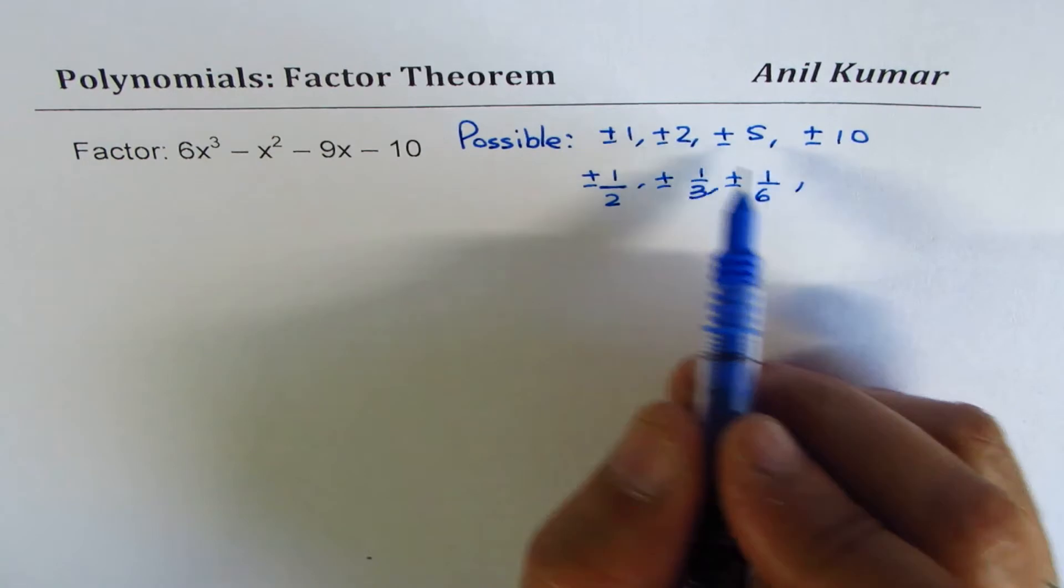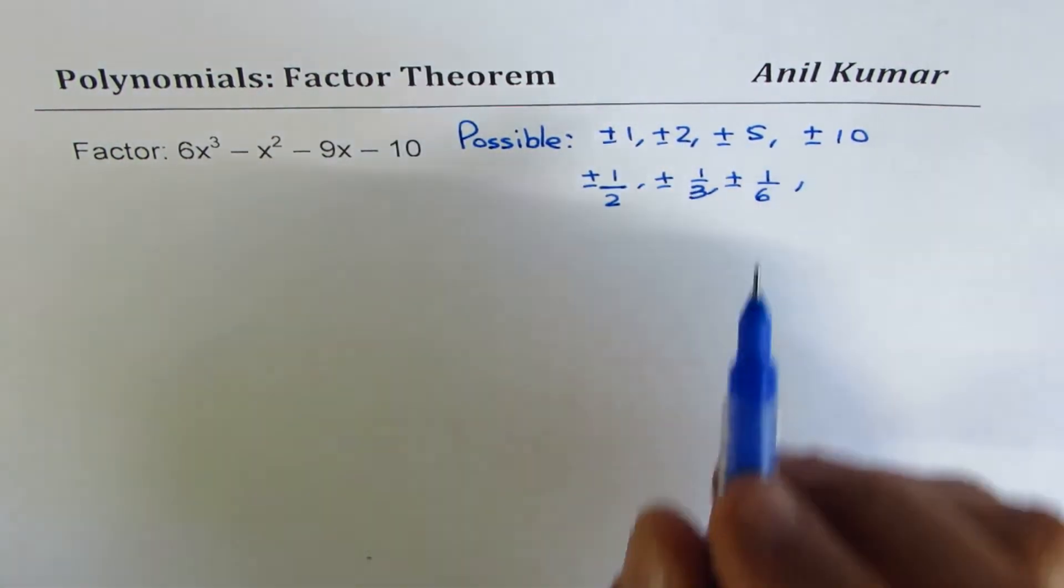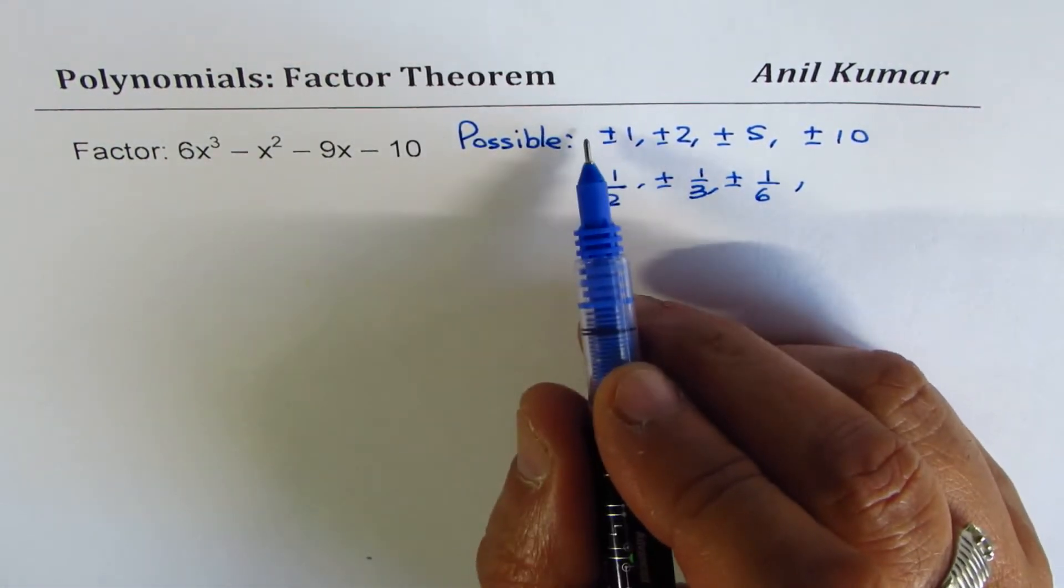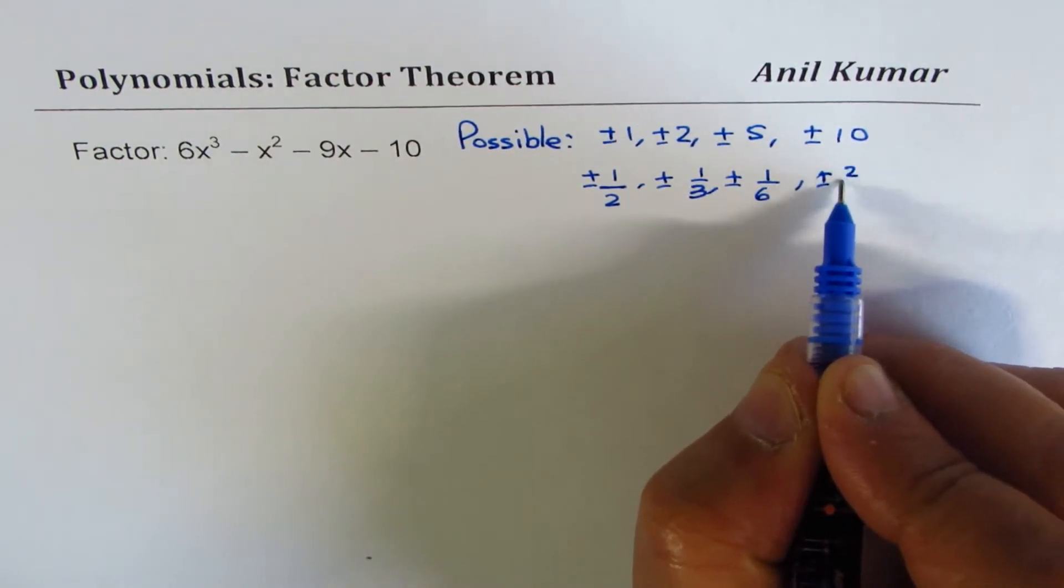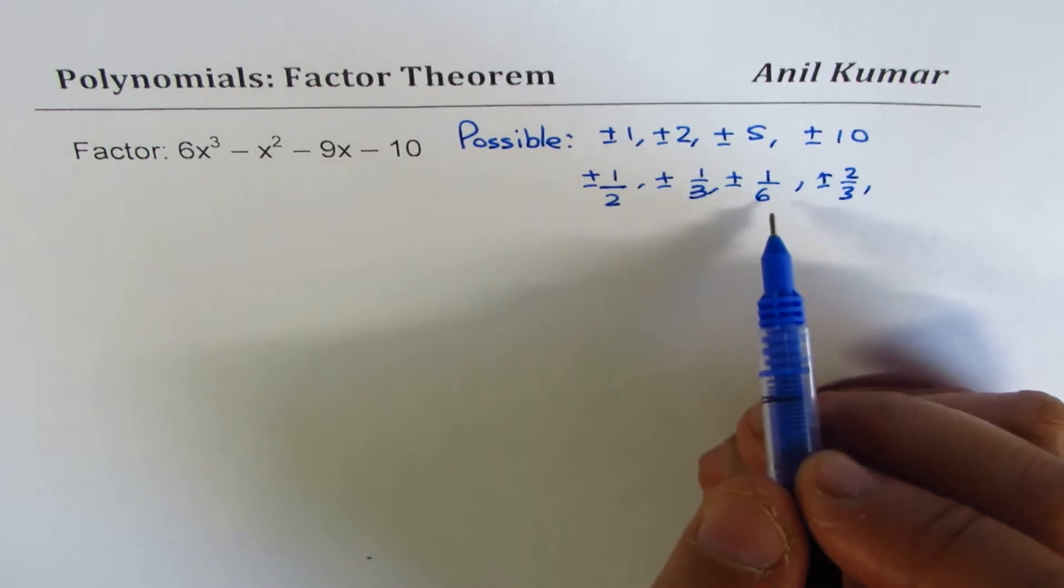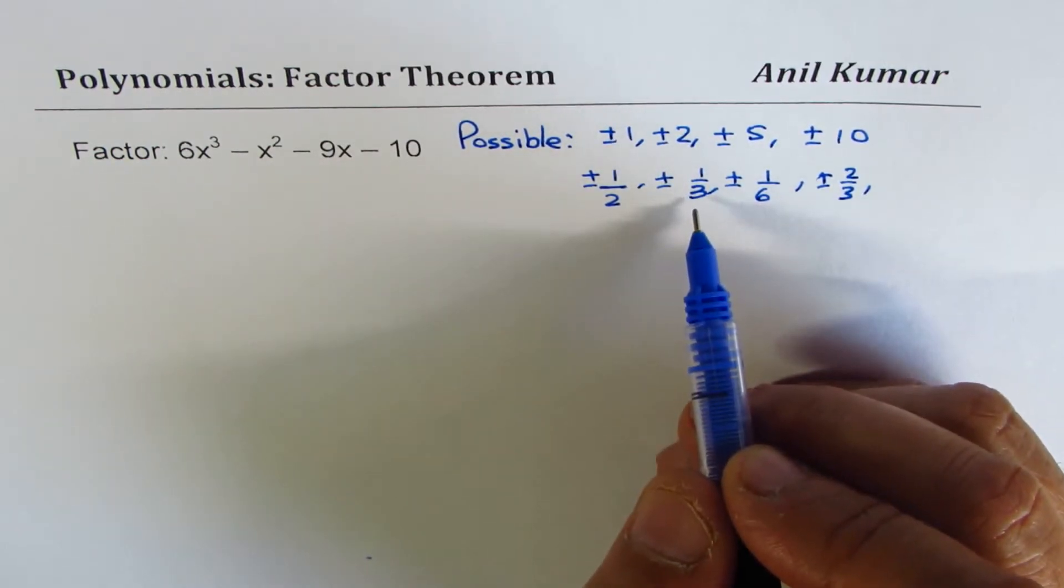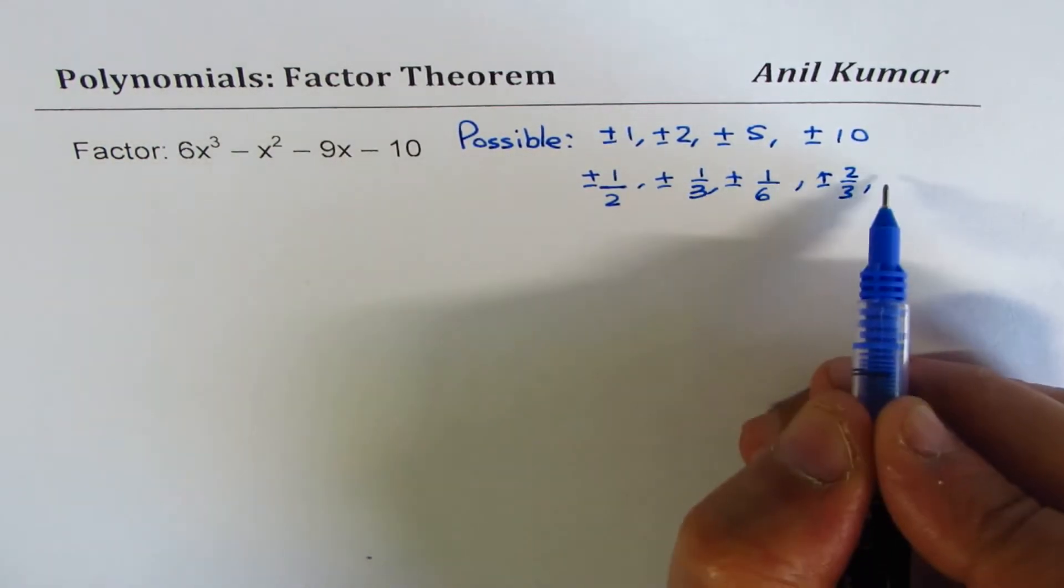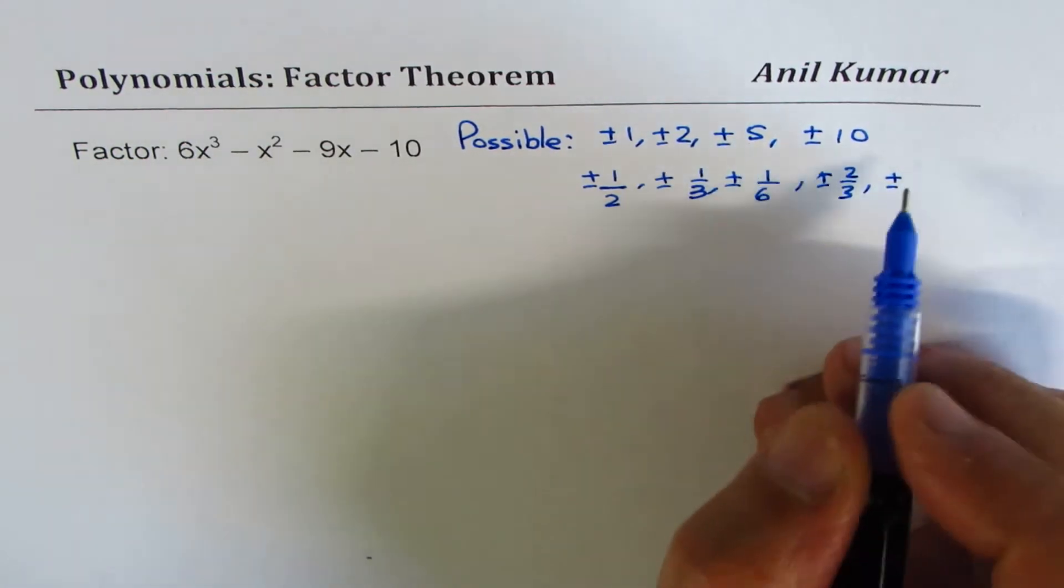Now, with 2 also, we could add to this list. 2 over 2 is 1, so we could have ±2/3, and 2/6 gives you 1/3 which is already covered.